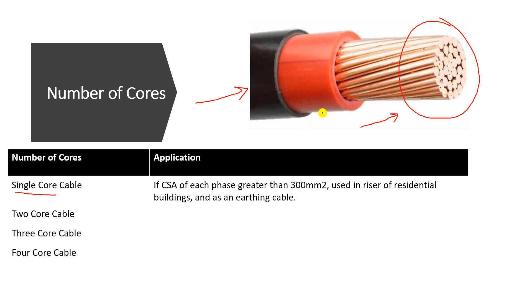Why do we use a single core cable? There are many cases. The first is when the cross sectional area of each phase is greater than 300 millimeter square. In a three-phase distribution network, if each phase has a large cross sectional area over 300 mm², we don't use a multi-core or three-core cable because it would be very large. So we use single core cables, each carrying one phase. It can also be used in risers of residential buildings and as an earth conductor cable.